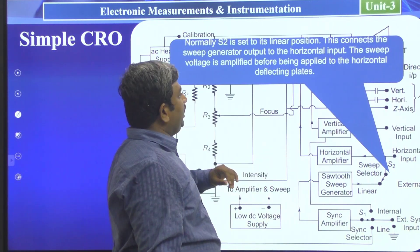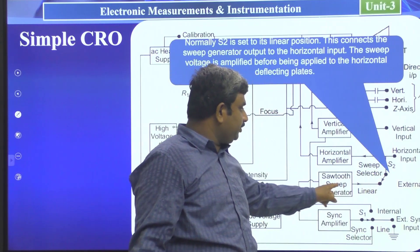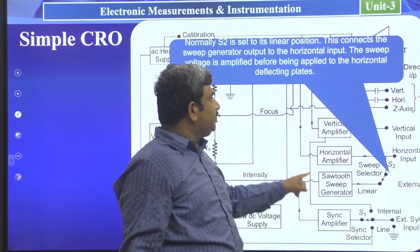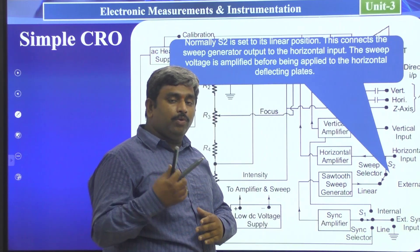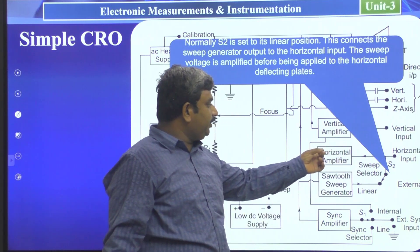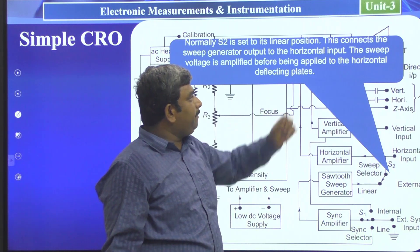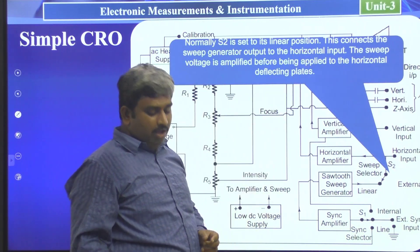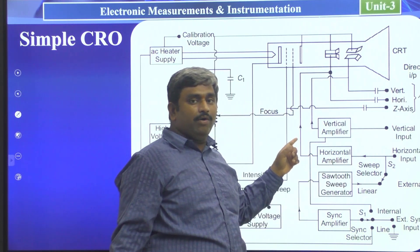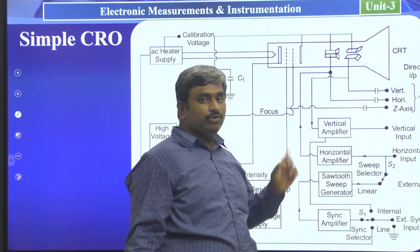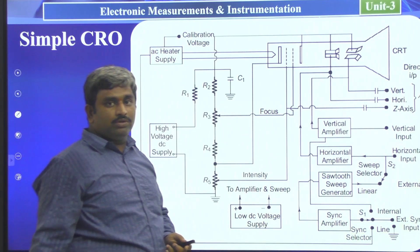Normally, switch S2 is set to its linear position, which connects the sawtooth sweep generator output to the horizontal input. The sweep voltage is amplified by the horizontal amplifier before being applied to the horizontal deflection plates. The sawtooth wave output is connected directly to the horizontal amplifier, which then connects to the horizontal deflection plates.